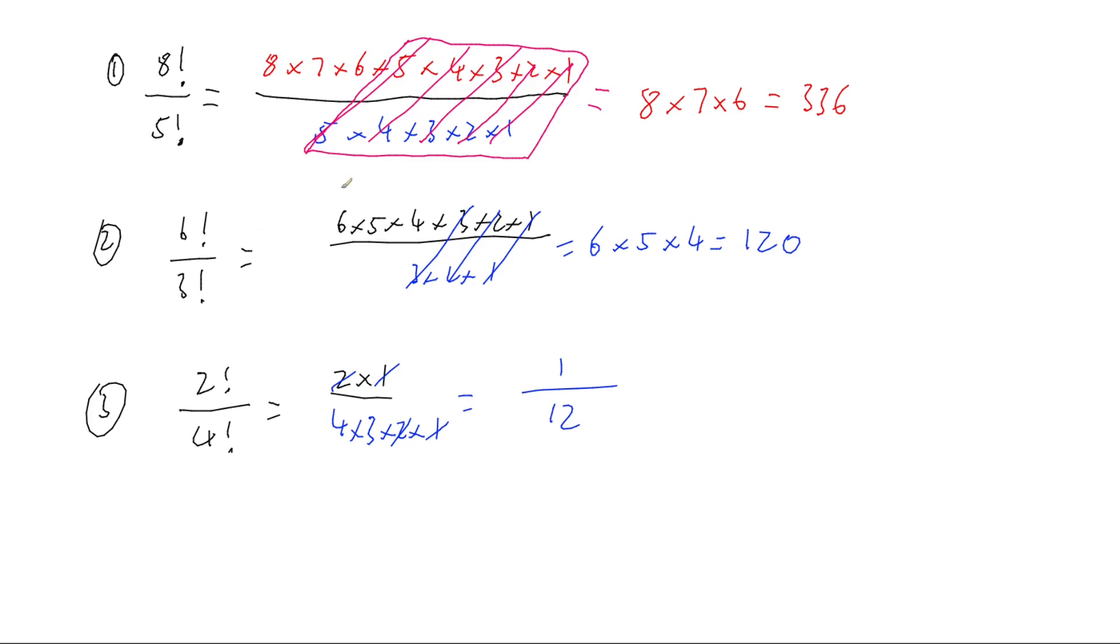So we can use our factorial notation to cancel out smaller factorials from bigger factorials if they're divided, and gives us something easier to calculate and something our calculator can actually achieve too.